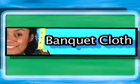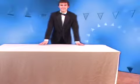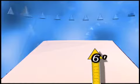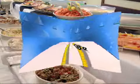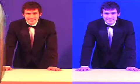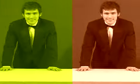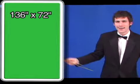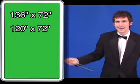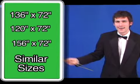And finally, the banquet cloth. The banquet cloth is your basic go-to linen for your standard 6 foot and 8 foot tables that are primarily used for food and beverage presentation. Banquet cloths come in various sizes depending on the preferred presentation of your event. Banquet cloth sizes are 136 inch by 72 inch, 120 inch by 72 inch, 156 inch by 72 inch, and other similar sizes.